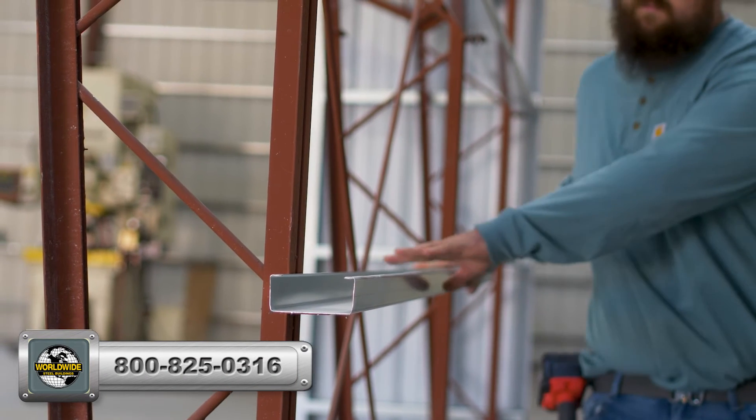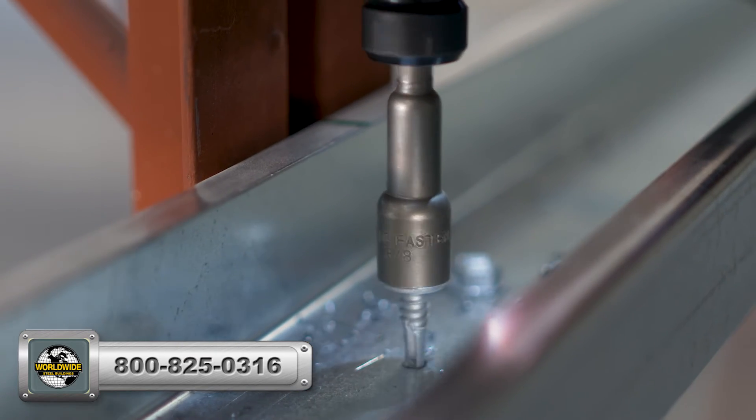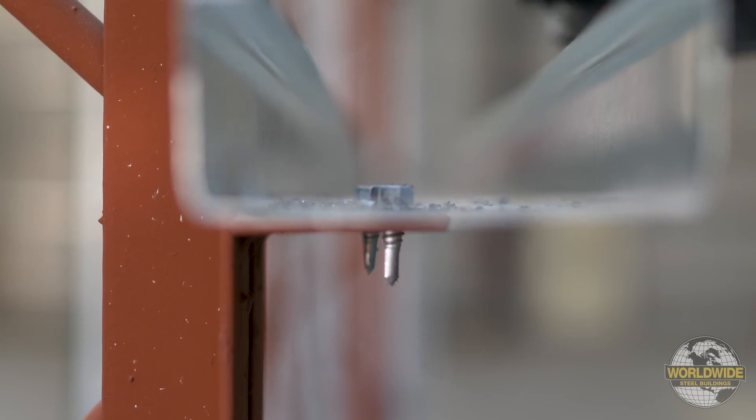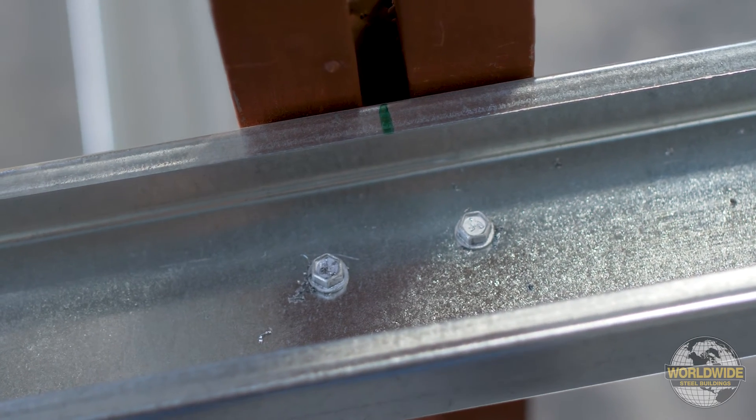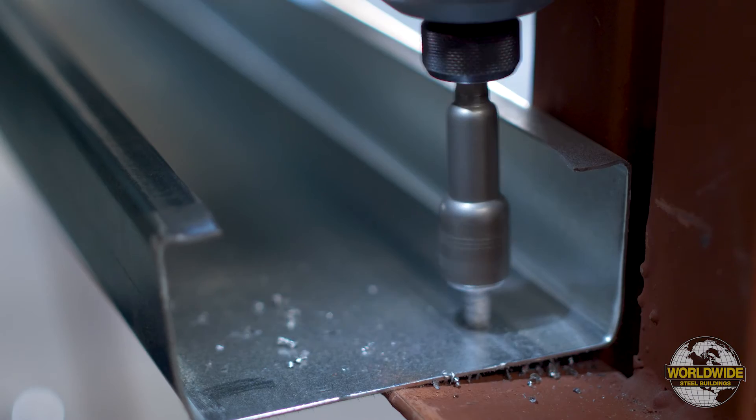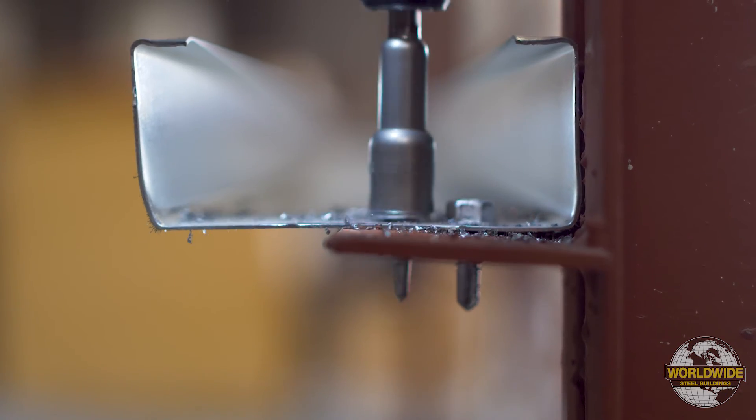On your corner column, located at grid 1 in our example, install two number 12 tech screws through the girt and into the welded clip on the column. On the frame at grid 2, because the girt stops at the center line of the column, you are only required to install two number 12 tech screws, as shown here.